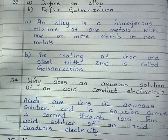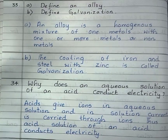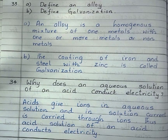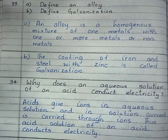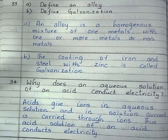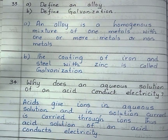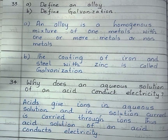Question A: define an alloy. An alloy is a homogeneous mixture of one metal with one or more metals or non-metals. Question B: define galvanization. Galvanization is the process of coating iron and steel with a thin layer of zinc.